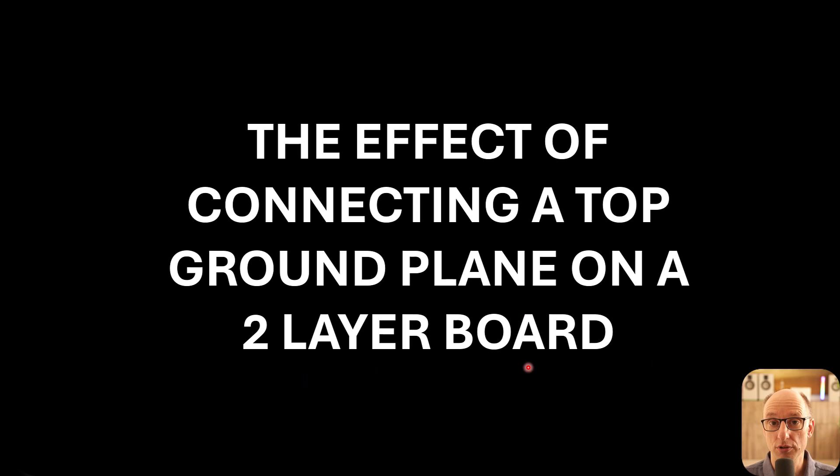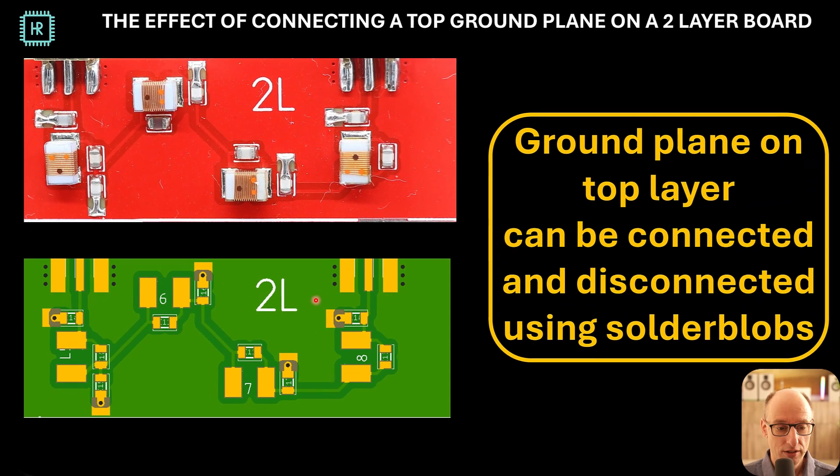Next we'll have a look what the effect is on our 2 layer design. Now our 2 layer design had some limitations compared to the 4 layer design. It was quite a lot worse. So let's see if it helps to connect the top layer. So the layouts here look exactly the same, and actually they are. The only difference here is that in this 2 layer design, the ground plane is 1.6 millimeters below the top layer.